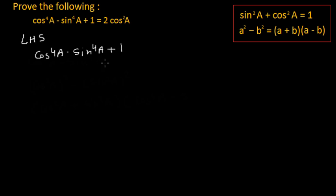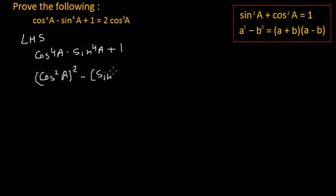If you see properly, cos to the power 4a minus sin to the power 4a can be written as cos square a whole square minus sin square a whole square, and this plus 1 I'll note as it is.